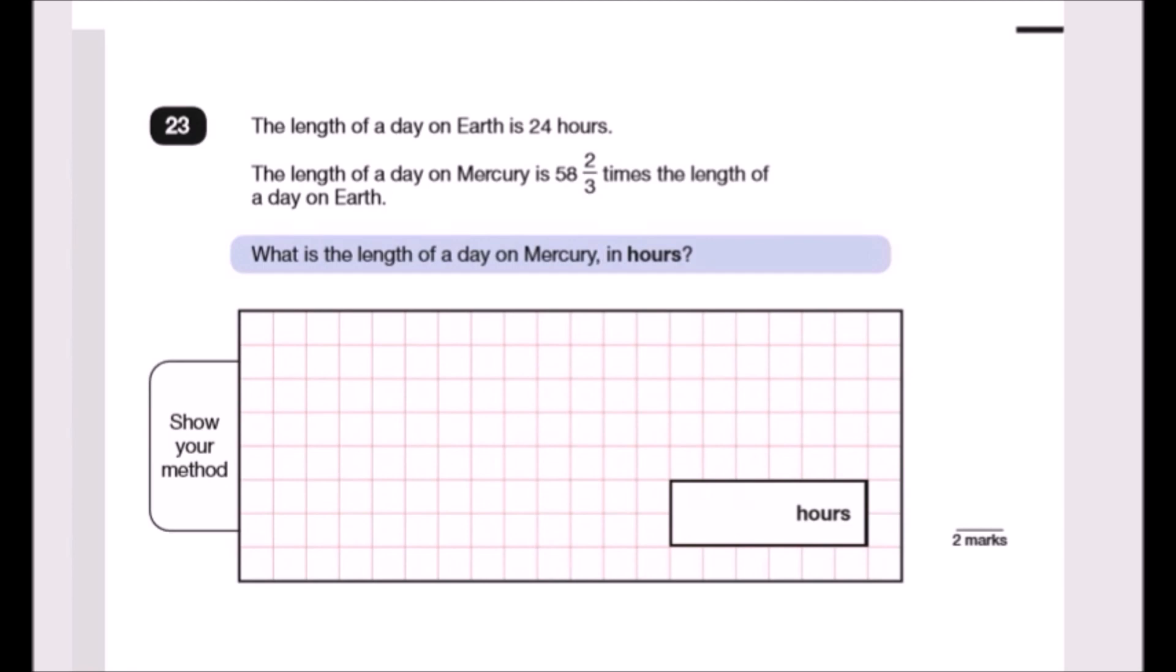Finally, question 23. We're almost there guys, good job you reached this far. So a length of a day on Earth is 24 hours. For Mercury, the same information: Mercury is 58 and 2/3 times the length of a day on Earth. That's just for a single day on Mercury. What is the length of a day on Mercury in hours? This is straightforward. It's just 58 and 2/3 times Earth's 24, so we just multiply that out.